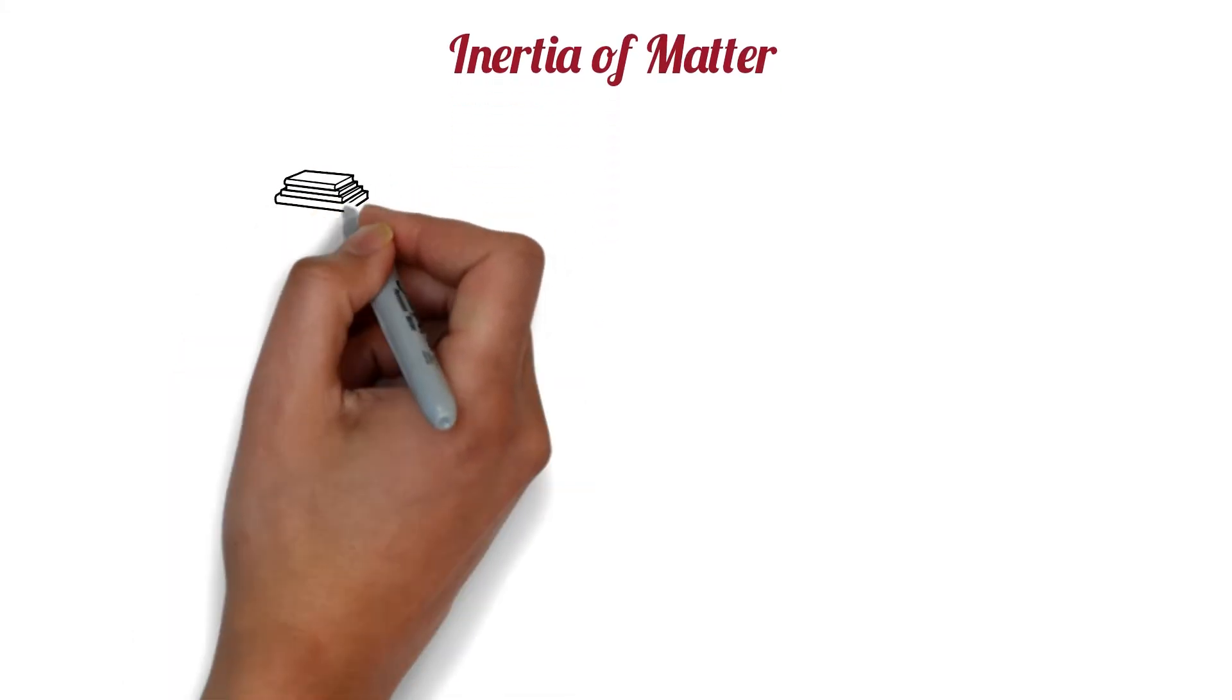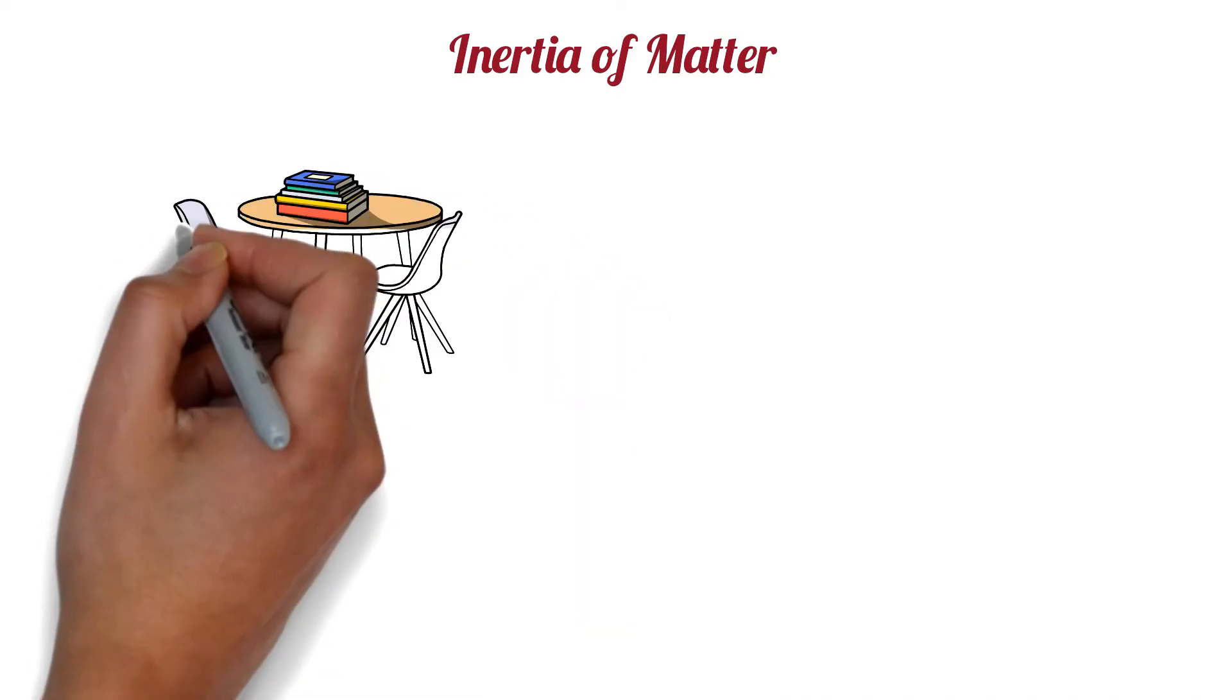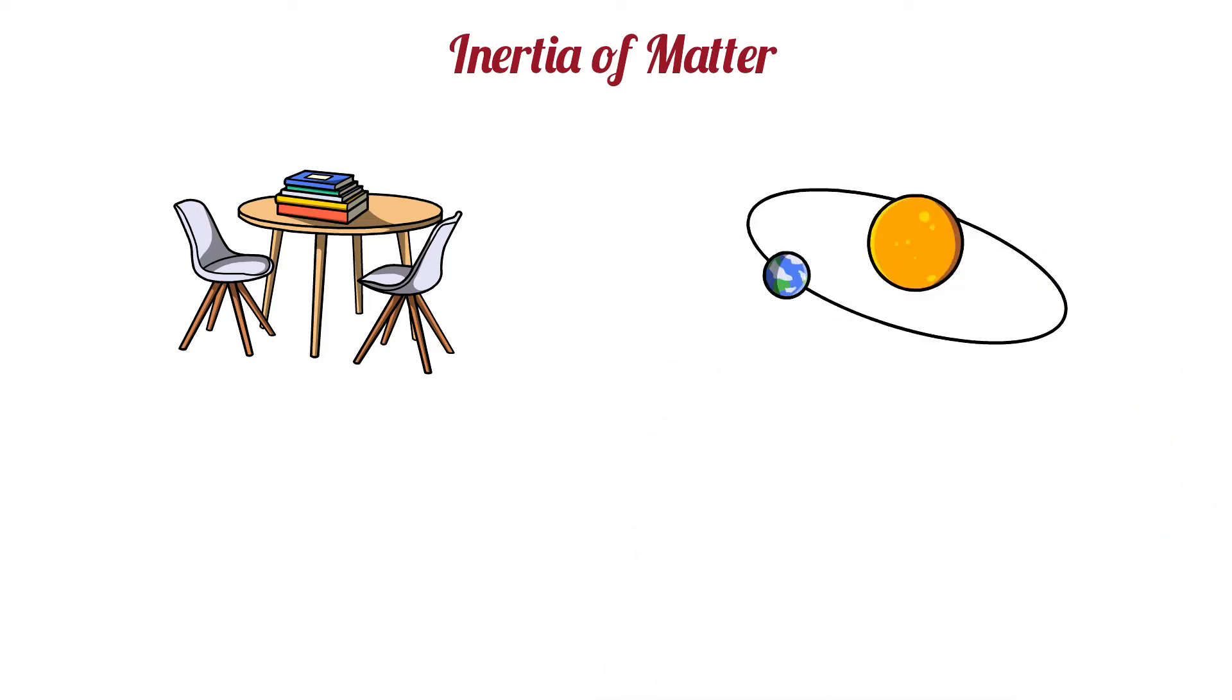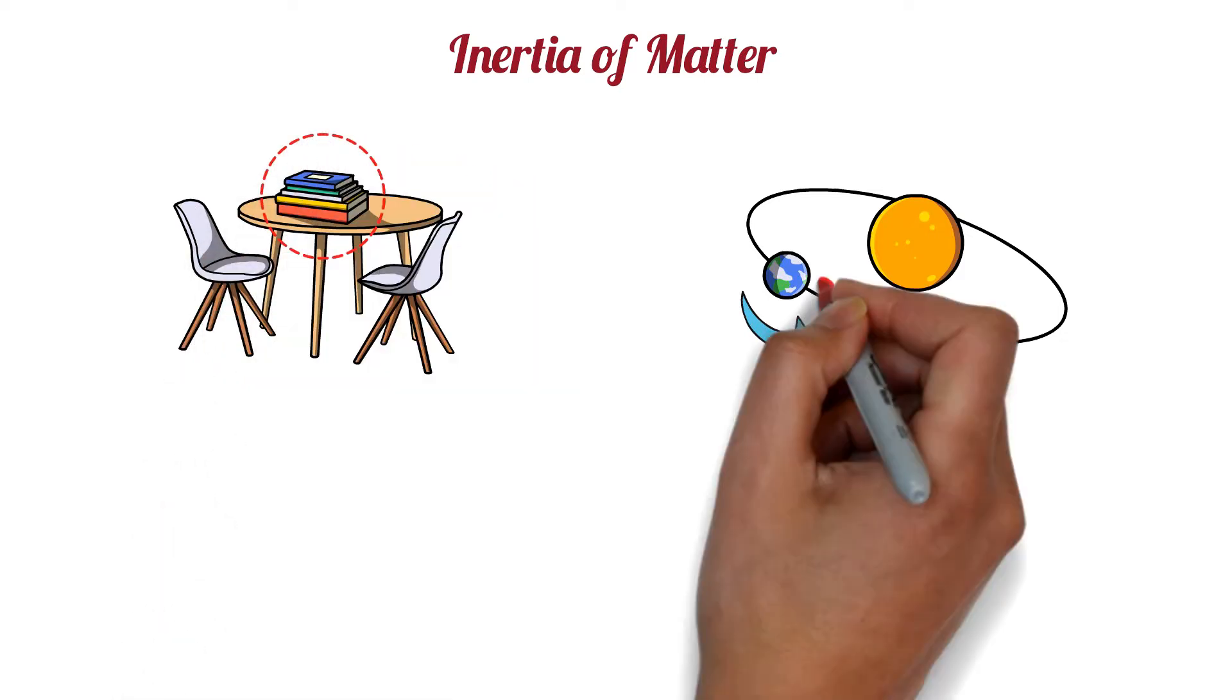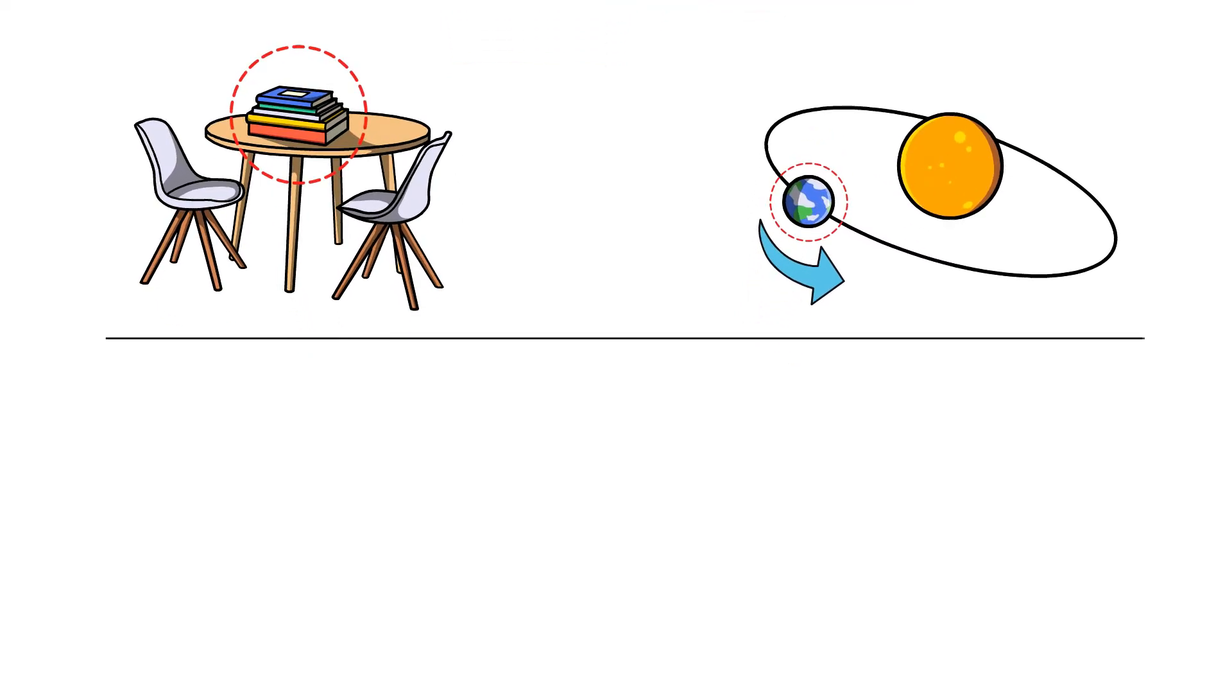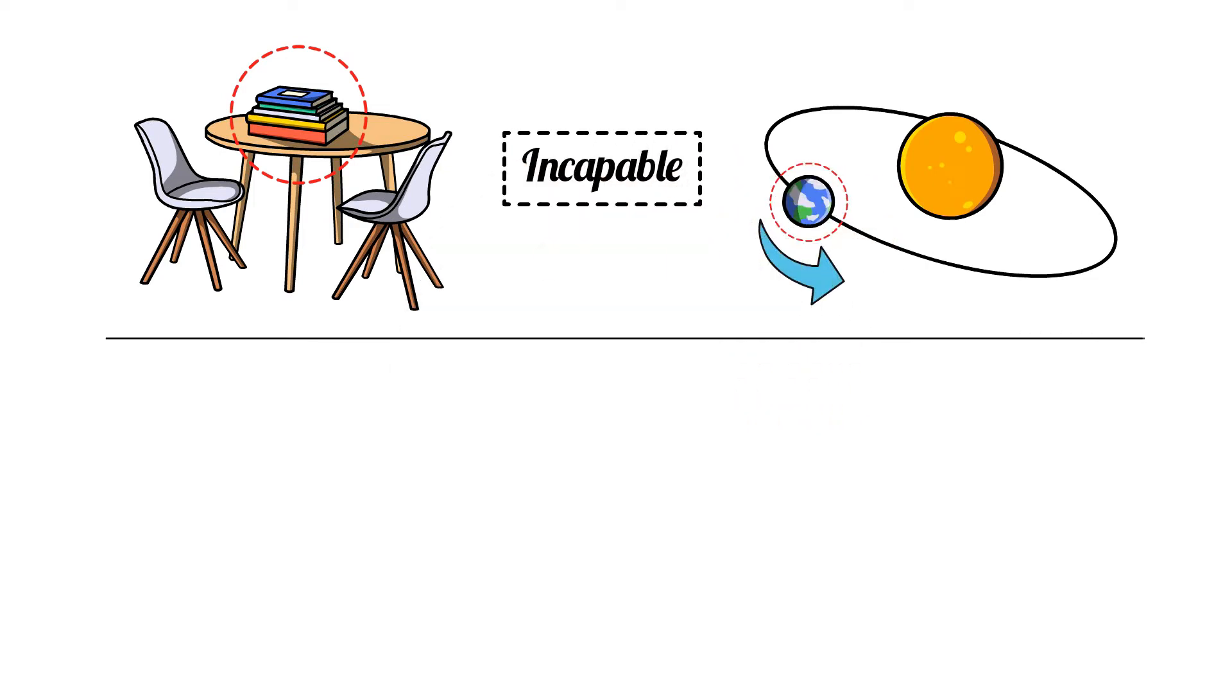Inertia of Matter. In the first law of motion, we see that the natural property of a stationary object is to remain stationary, and the natural property of a moving object is to keep the object in motion. A stationary object cannot move on its own, and a moving object cannot stop on its own. In both cases, the object is incapable of changing its state by itself. This incapability of the object is called inertia.